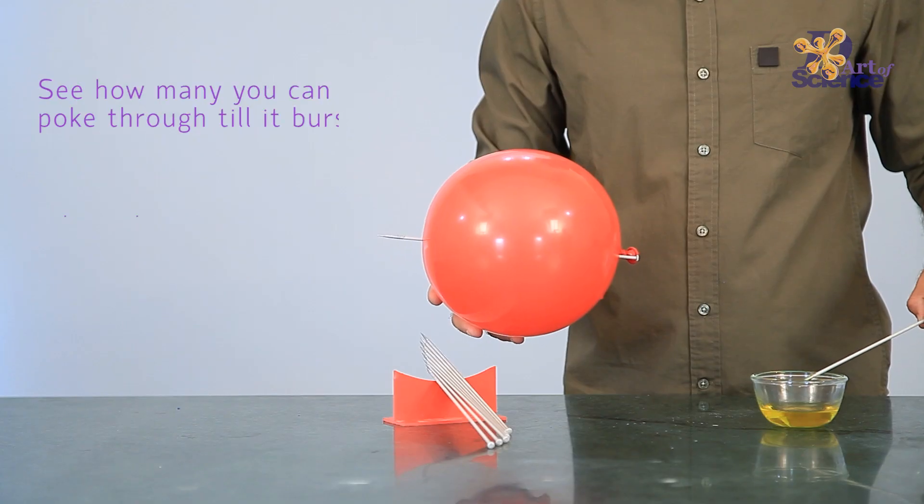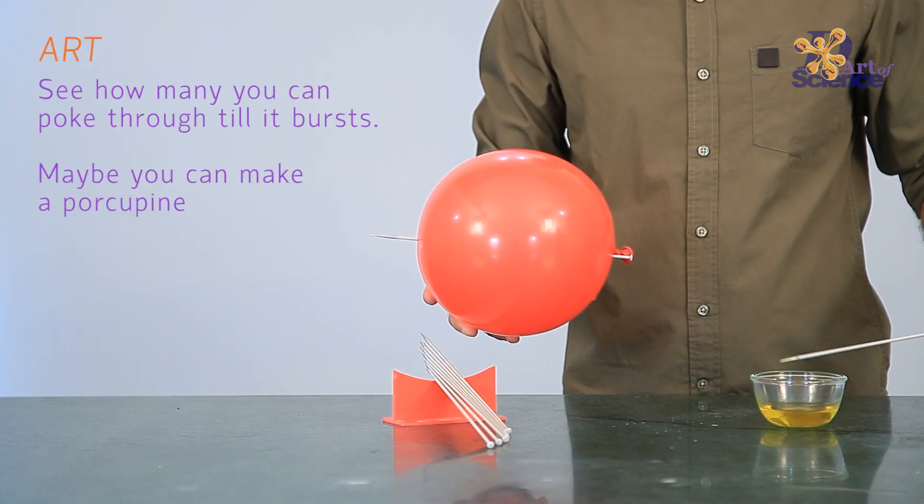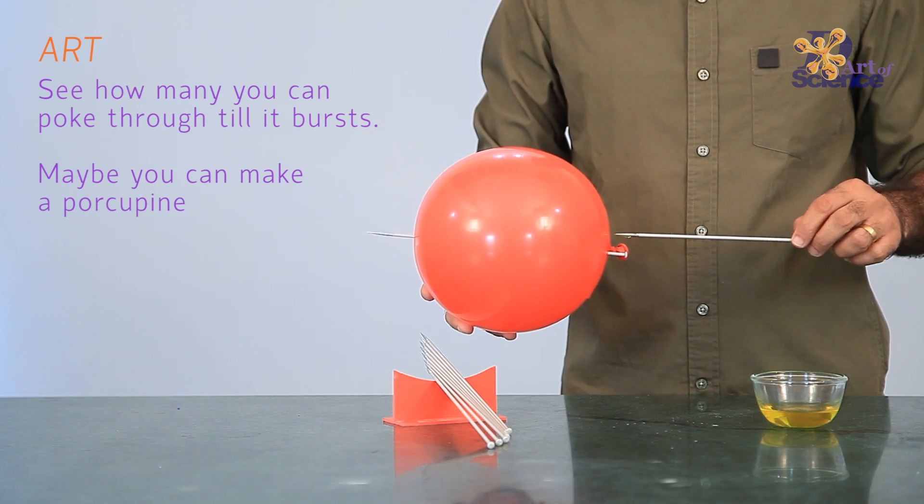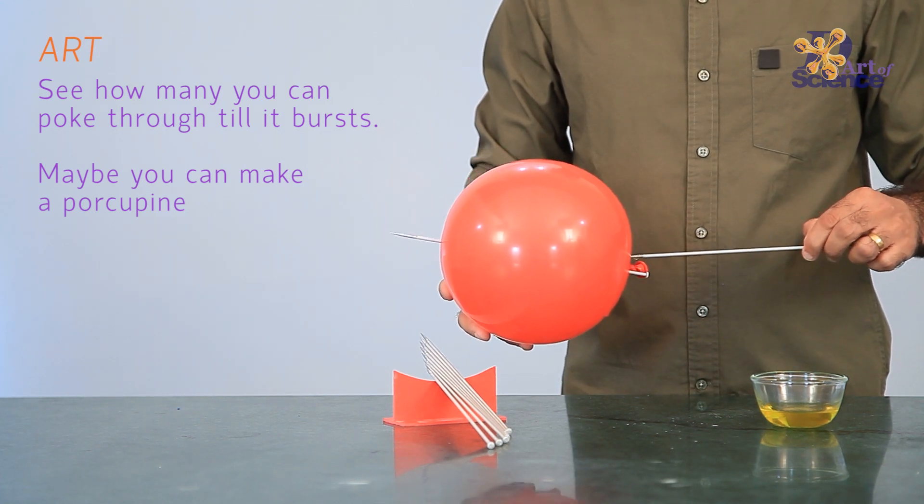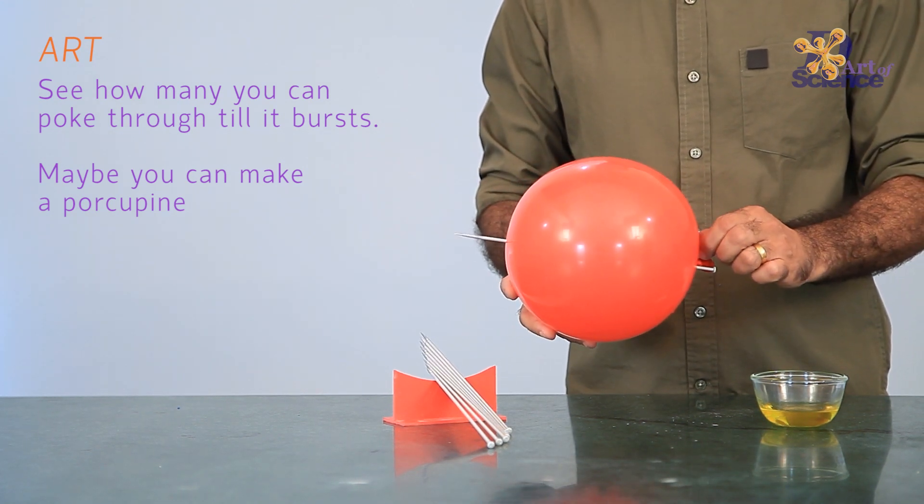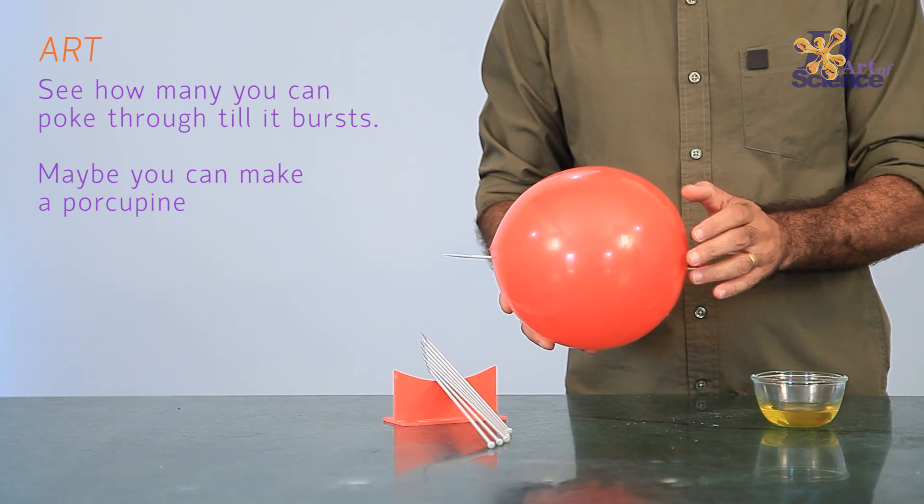When we push a skewer through the balloon, the rubber stretches and bends around the skewer without breaking. I hope you enjoyed the video and understood the explanation. We'll see you next week.